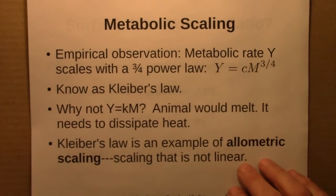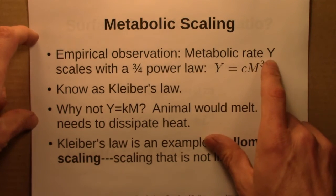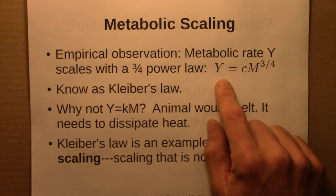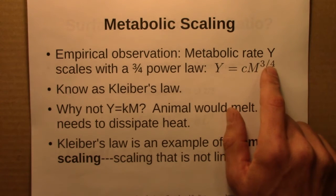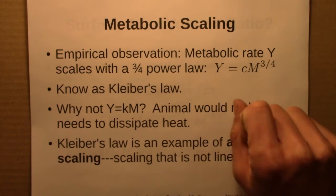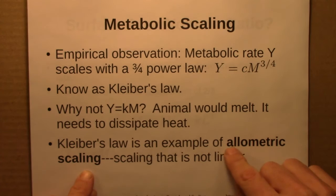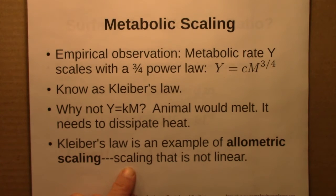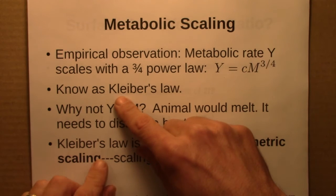We then turned our attention to metabolic scaling. There's a long-standing empirical observation that the metabolic rate Y scales with a three-quarter power law, so the metabolic rate of an organism is related to its mass raised to the three-quarters power. This is known as Kleiber's law, and it's an example of what's called allometric scaling, which in biomechanics and physiology refers to any scaling that's not linear.